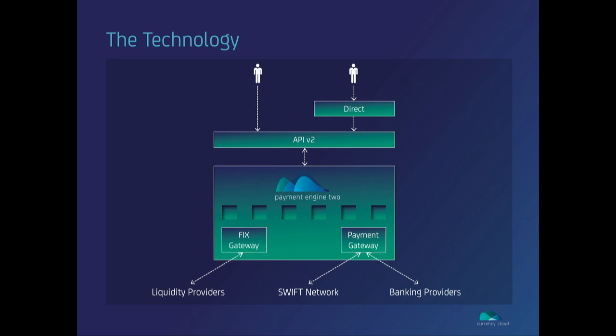This is a simplified diagram showing our application and services layer of our system. All of the heavy lifting is done by the services that make up Payment Engine 2. These services include compliance, reporting, balances, and transactions. Everything available through our API has a service inside of our payment engine. This also includes our gateways — our fixed gateway and our payments gateway, which we build and maintain.